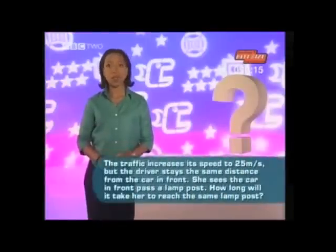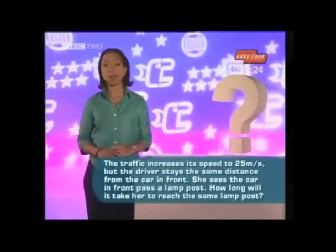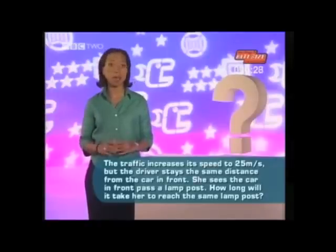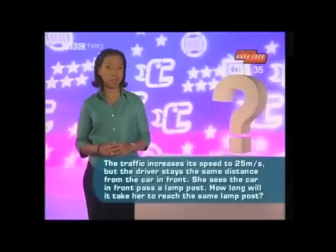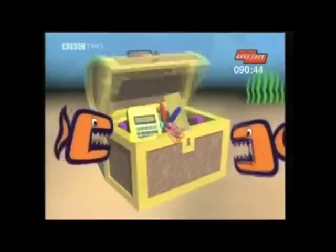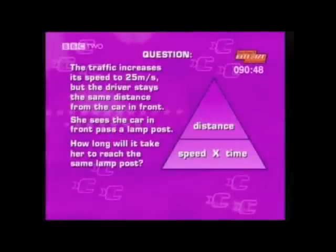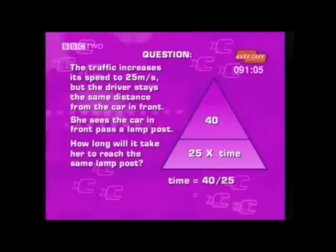In part b, the traffic increases its speed to 25 meters per second but the driver stays the same distance from the car in front. She sees the car in front pass a lamp post — how long will it take her to reach the same lamp post? Read the question carefully: we're looking for time. We know the speed is now 25 meters per second and the distance between the cars has stayed the same at 40 meters. From the formula triangle, time equals distance divided by speed: 40 divided by 25 equals 1.6 seconds.